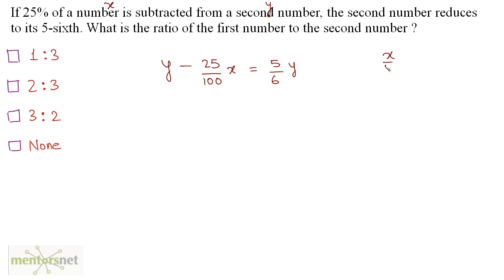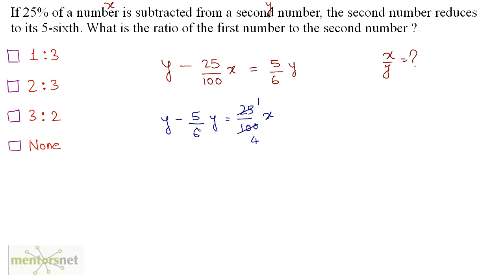We have to find x by y, the ratio of the first number to the second number. Rearranging: y minus 5/6 y on the left gives us, on the left-hand side, 6y minus 5y divided by 6, which equals 25 by 100 x, that is x by 4. So y by 6 equals x by 4.